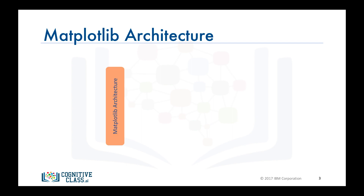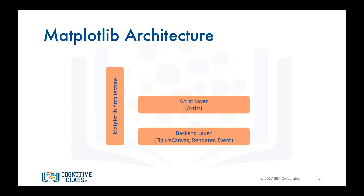Matplotlib's architecture is composed of three main layers: the backend layer, the artist layer — where much of the heavy lifting happens and is usually the appropriate programming paradigm when writing a web application server, a UI application, or a script to be shared with other developers — and the scripting layer, which is the appropriate layer for everyday purposes and is considered a lighter scripting interface to simplify common tasks and for quick and easy generation of graphics and plots.